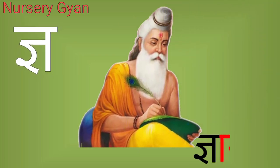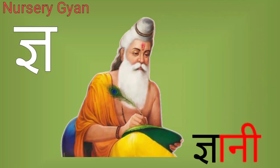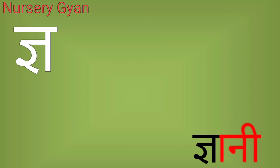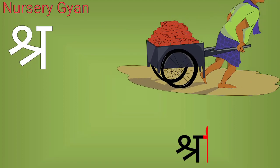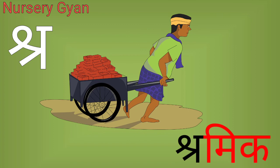ज्ञ — ज्ञ से ज्ञानी। श्र — श्र से श्रमिक।